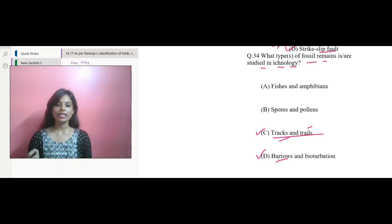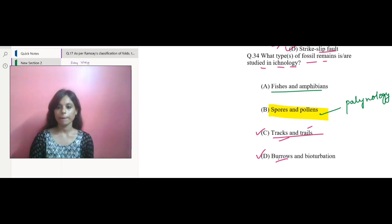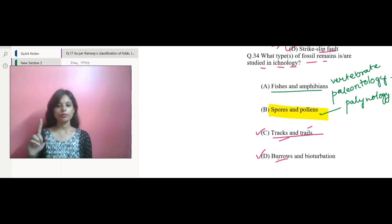It includes the tracks, the trails, the burrows and also other structures which are created by organisms in sediments or in rocks. The study of spores and pollens is not included over here, that is the second option I am talking about. It's not included in ichnology. Why? Because their study is known as palynology. While the study of fishes and amphibians is done under vertebrate paleontology. This is why we are considering option C and option D as a part of ichnology.